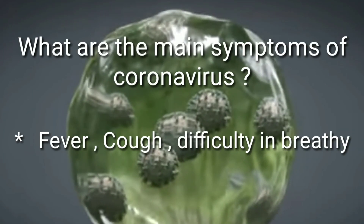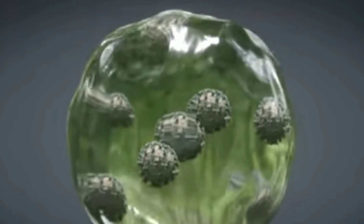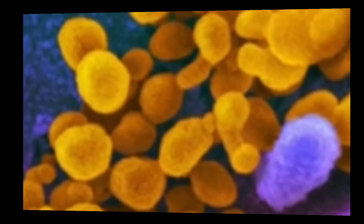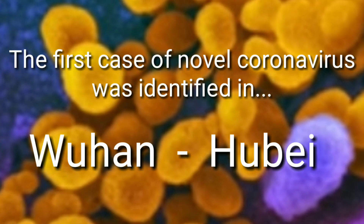When was the coronavirus first identified? 1960. What are the main symptoms of coronavirus? Fever, cough, and difficulty in breathing. The first case of novel coronavirus was identified in Wuhan, Hubei.